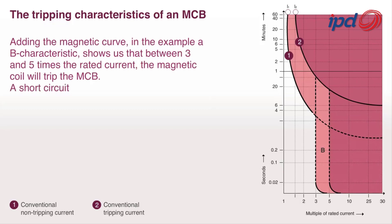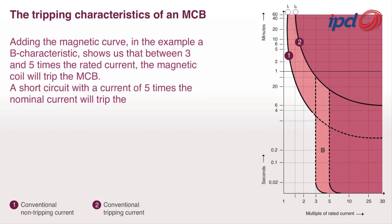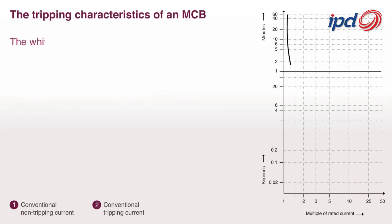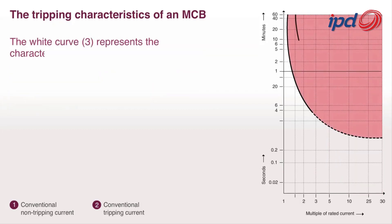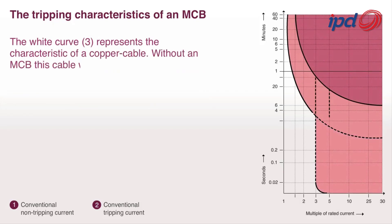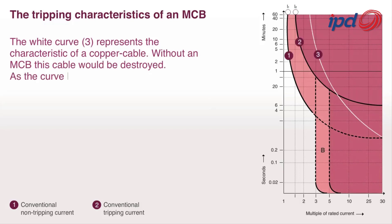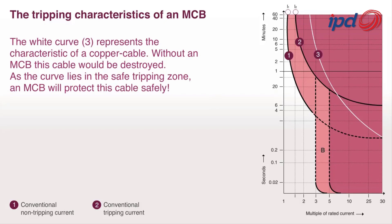A short circuit with a current of 5 times the nominal current will trip the MCB immediately. The white curve (3) represents the characteristic of a copper cable. Without an MCB, this cable would be destroyed. As the curve lies in the safe tripping zone, an MCB will protect this cable safely.